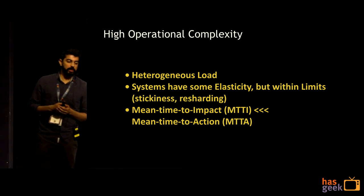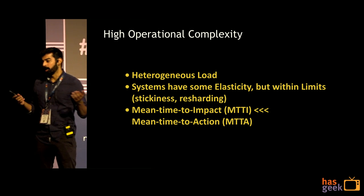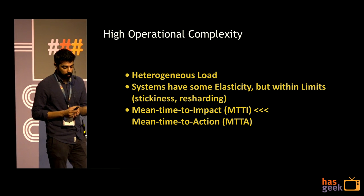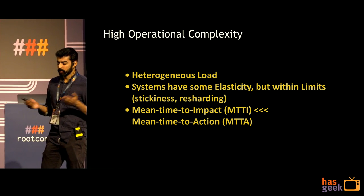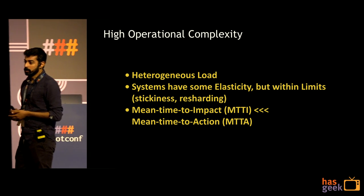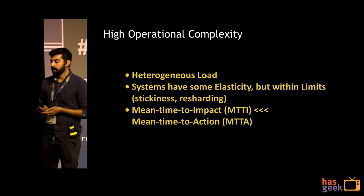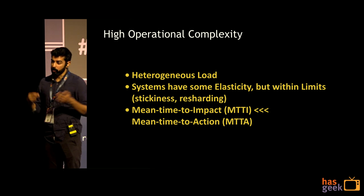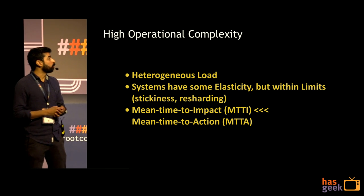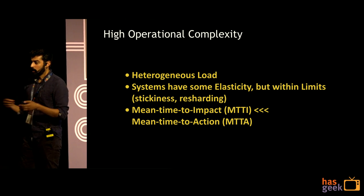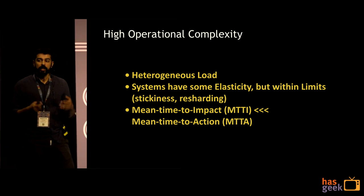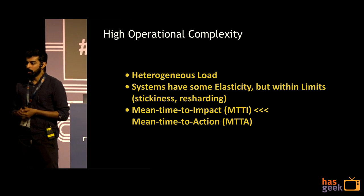Even though we can provision for high peak loads, whatever elasticity systems have tends to be within a certain limit. The limits might be prosaic — you can't spend on an infinitely elastic cloud or autoscale from 50 to 1,000 instances. But limits may also exist at the application layer: requirements for HTTP session stickiness, or consistent sharding that requires resharding when adding servers. All of these create limits on elasticity, so you have to find ways to avoid hitting them.